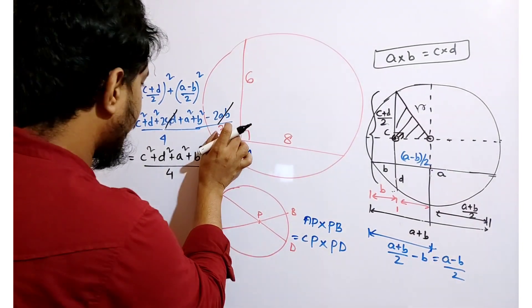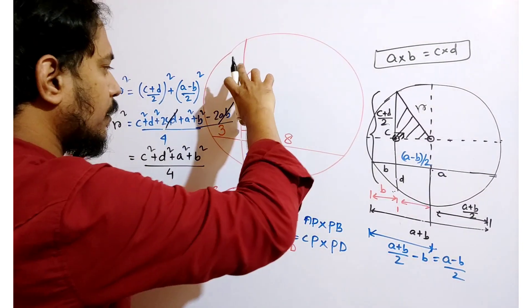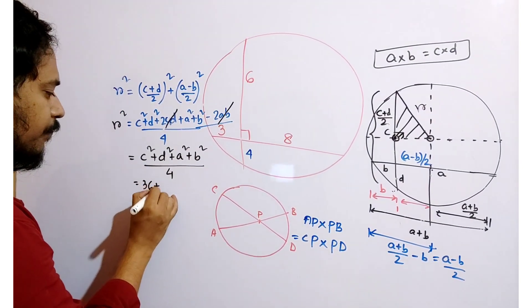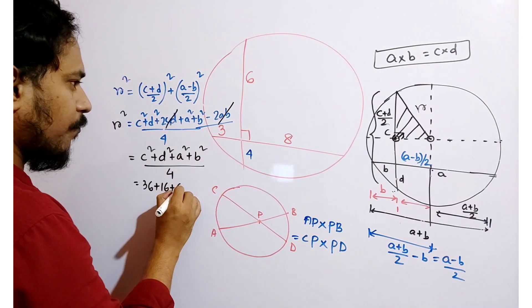Now, here C is how much? 6. C square is 36. D is 4, so D square is 16. A is 8, so A square is 64.